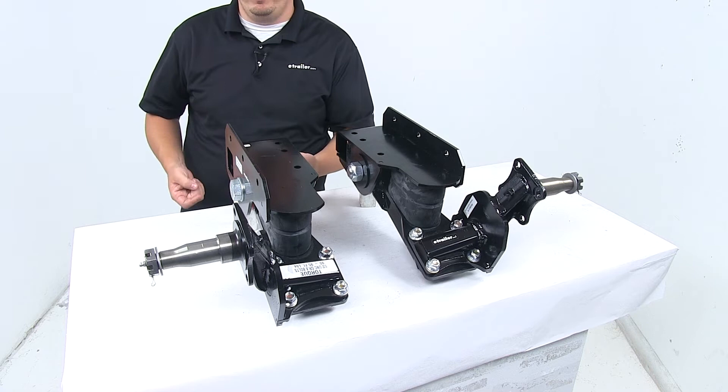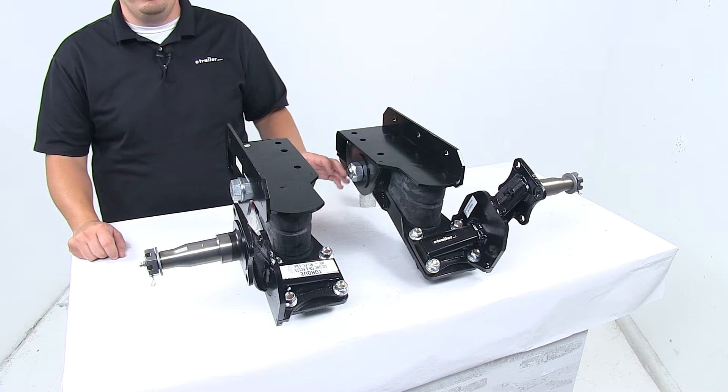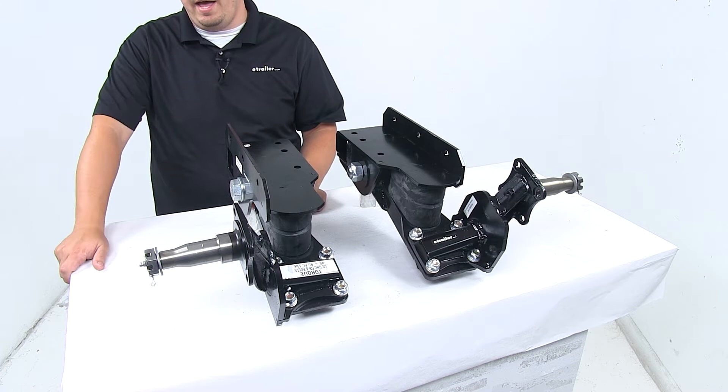Also here at the back, we have rebound springs that act as return devices to minimize rattle and bottoming out. Those springs create constant pressure on the arm, so the suspension is never completely relaxed.